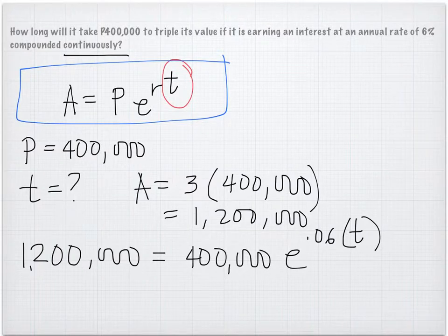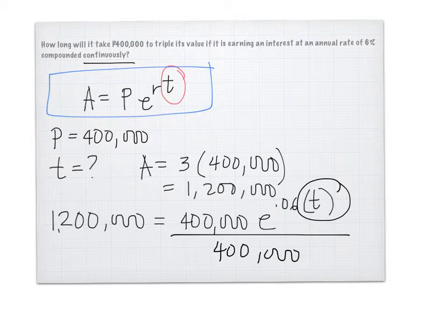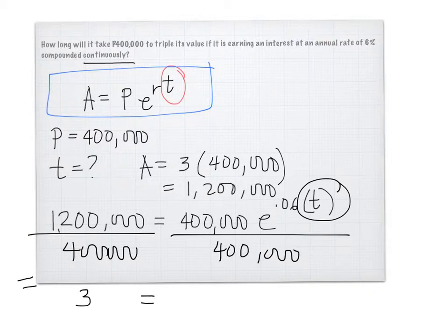Working on the equation, we have to divide by 400,000 because we want to find this. So 400,000, obviously this will go back to 3, then no more 400,000, e to the 0.06. So we have to work on this through ln, or natural logarithms.